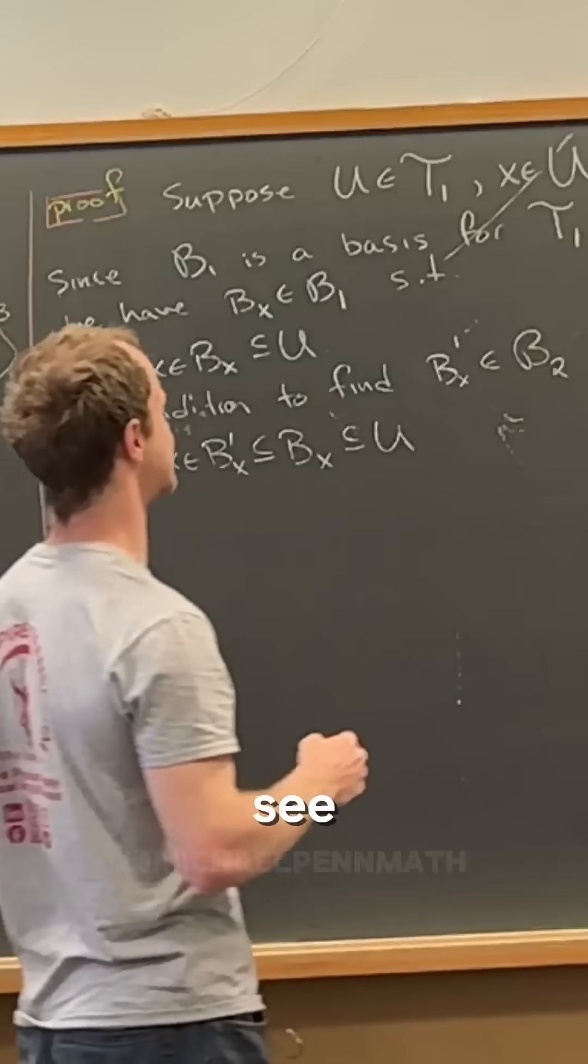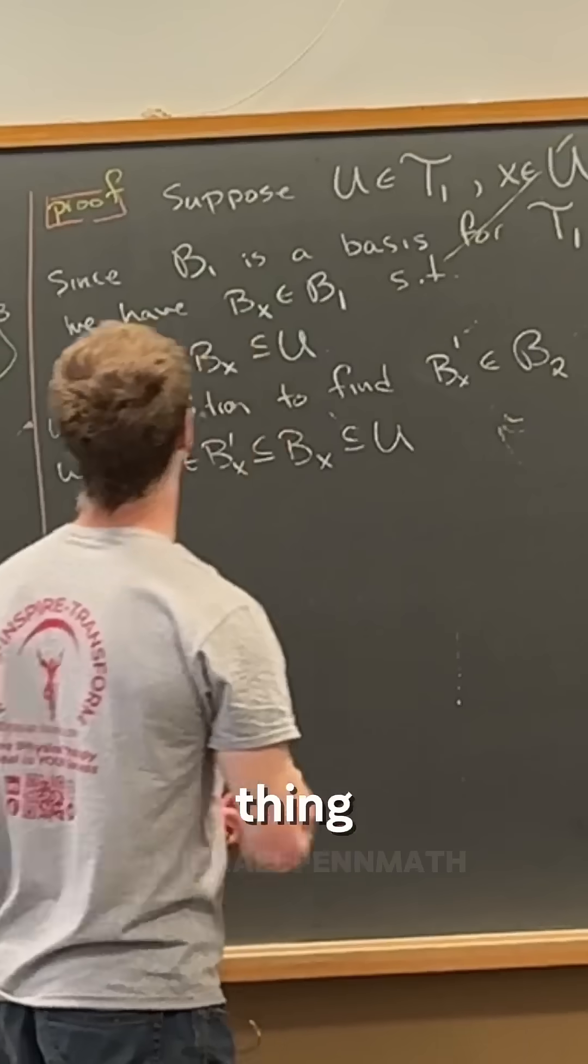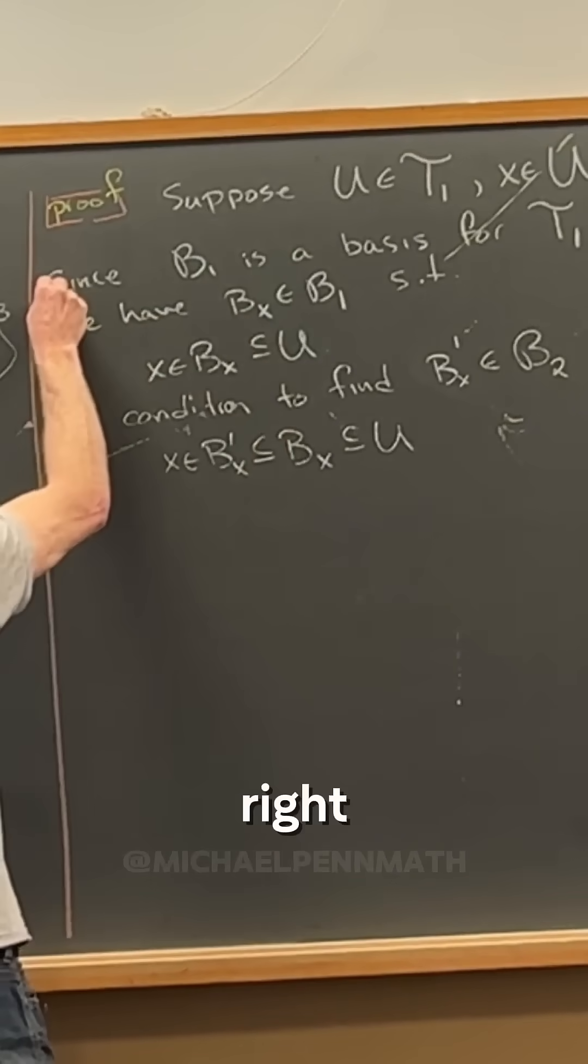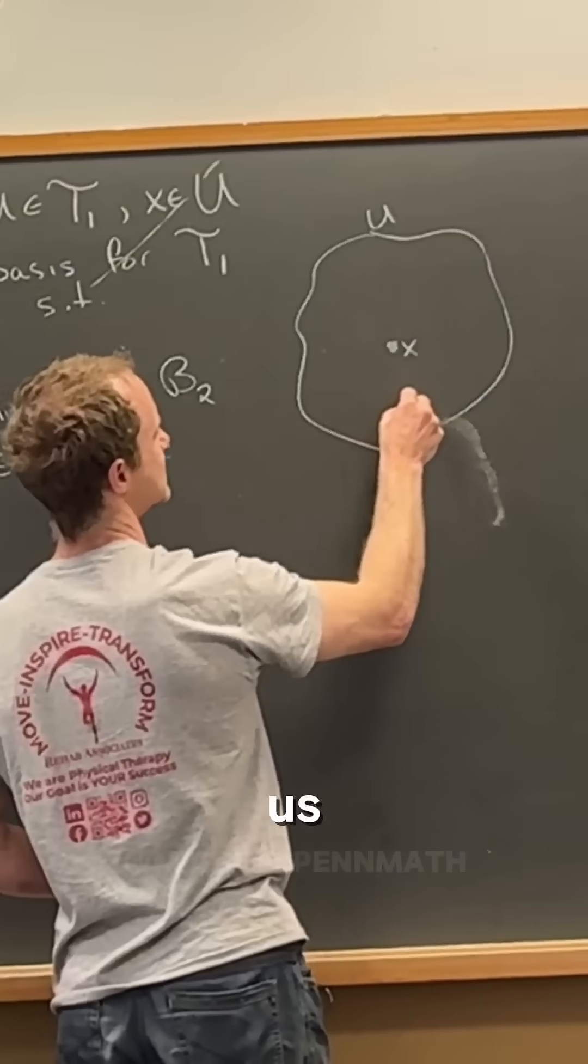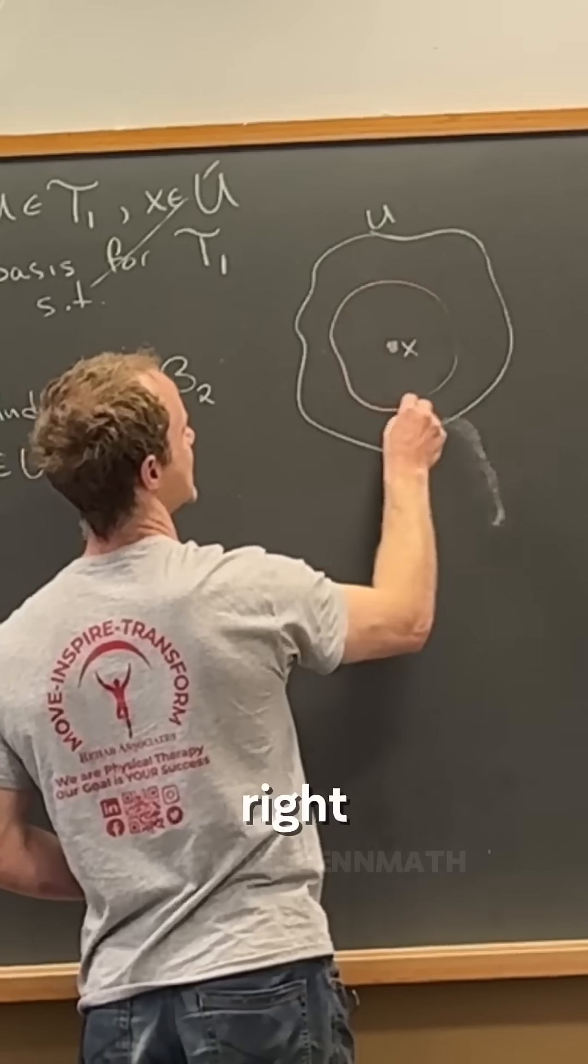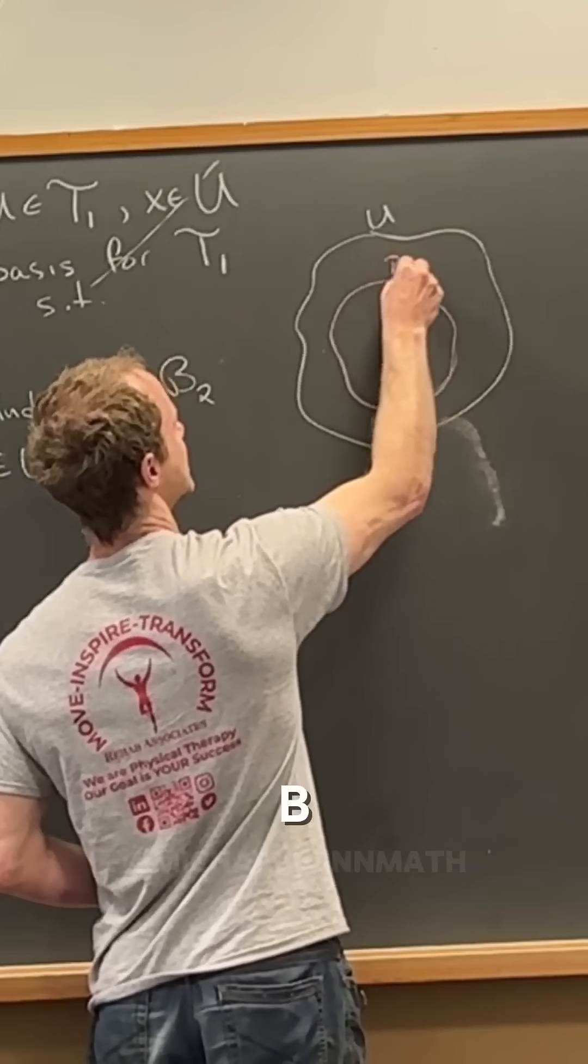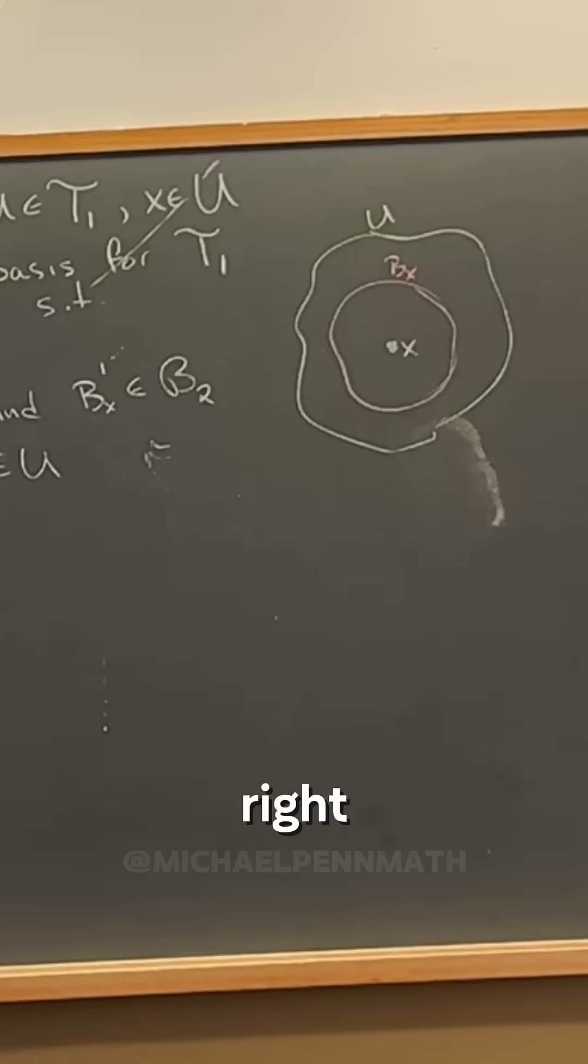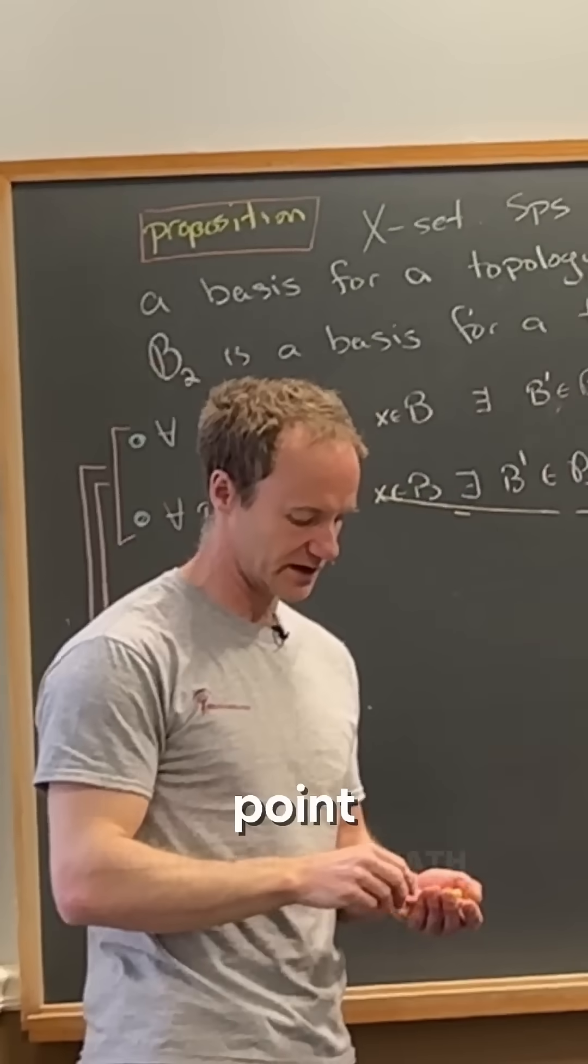Okay, so let's see. The first thing, let's say this bit right here gave us this thing right here, which is B_x, right, inside of the open set but containing our point.